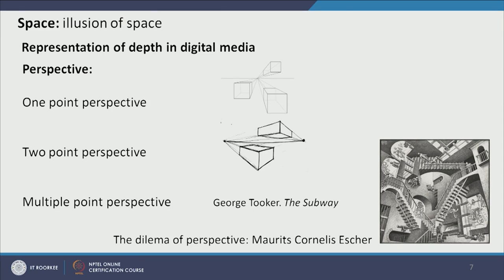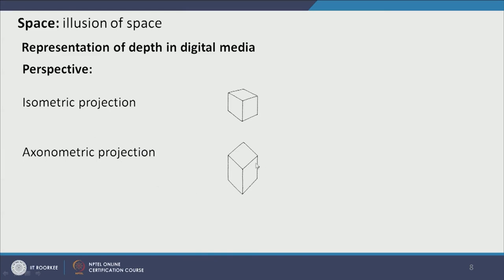For example, George Tucker's painting 'The Subway' uses multiple-point perspective — you can see the painting online. There can also be a dilemma of perspective where perspective becomes altogether confusing. For example, Escher's painting creates a lot of confusion of perspective, yet it has a sense of depth — the staircase appears as both plan and elevation and everything is twisted. Apart from perspective, there are two other ways of showing depth: isometric projection, with 30-degree angles, and axonometric projection, with 45-degree angles, where lines do not vanish to a single point but remain parallel.